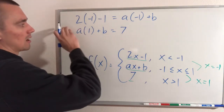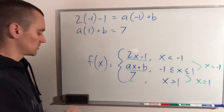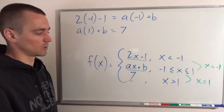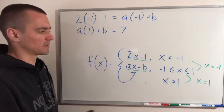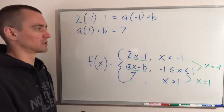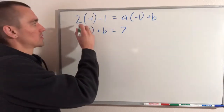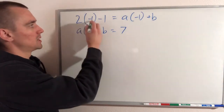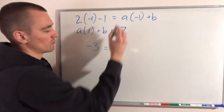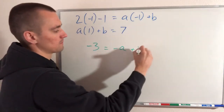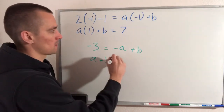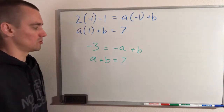We now have a system of two equations with two variables that we can solve using a couple of different methods. Let's start by simplifying both equations. The first equation: 2 times −1 gives −2, minus 1 gives −3, and −1 times a is −a, so we get −3 = −a + b. The second equation: 1 times a is just a, so we get a + b = 7.